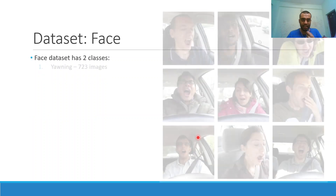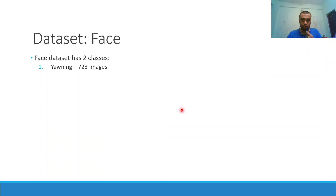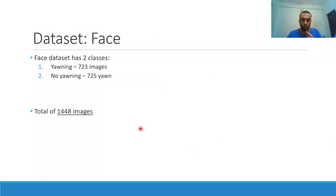The face dataset also has two classes. The yawning class shows a lot of variation in lighting, angle, and background. The not-yawning class has 725 images, again with variation in angle, lighting, and background. A total of 1,448 images are there. We want our model to be as robust as possible because it will be expected to perform well in real-life situations with variation in camera angle, zoom, and lighting conditions.